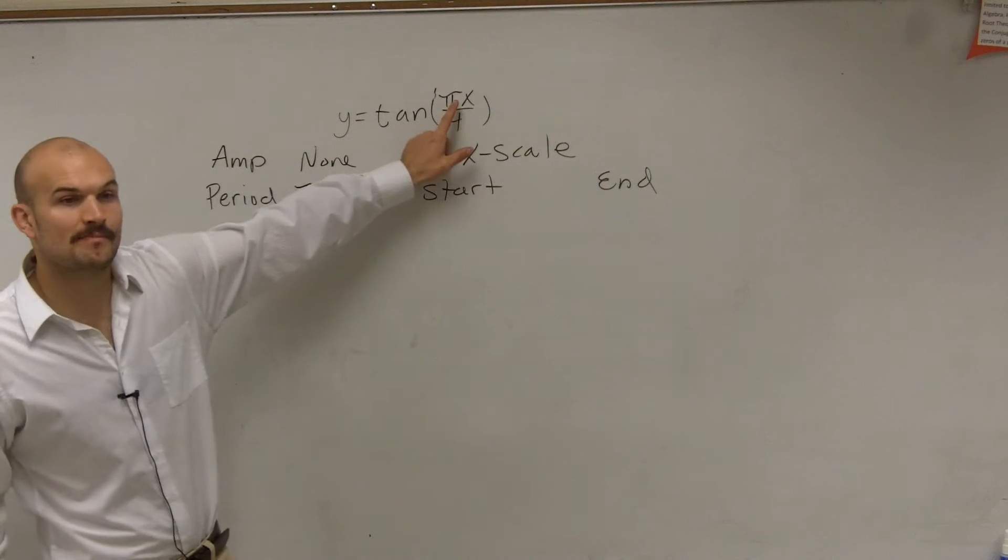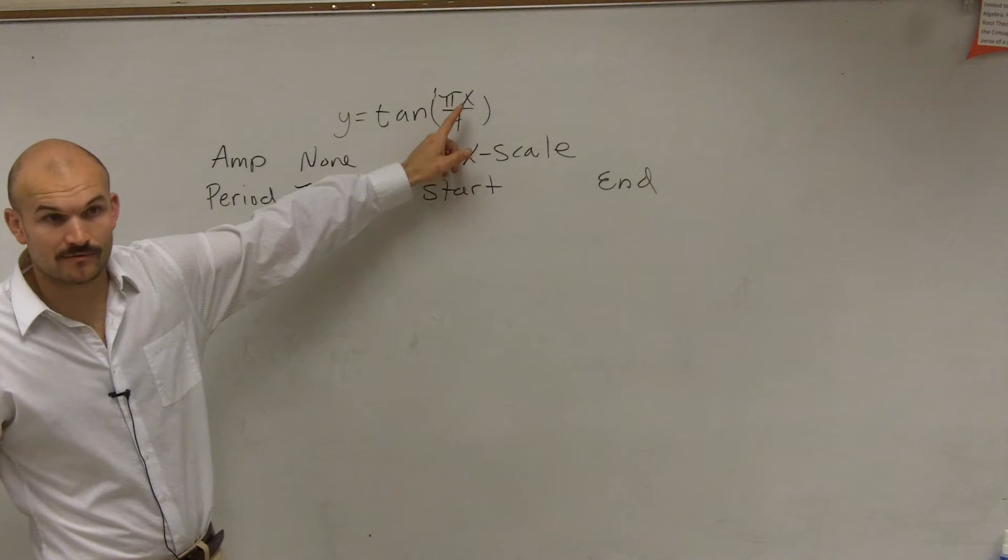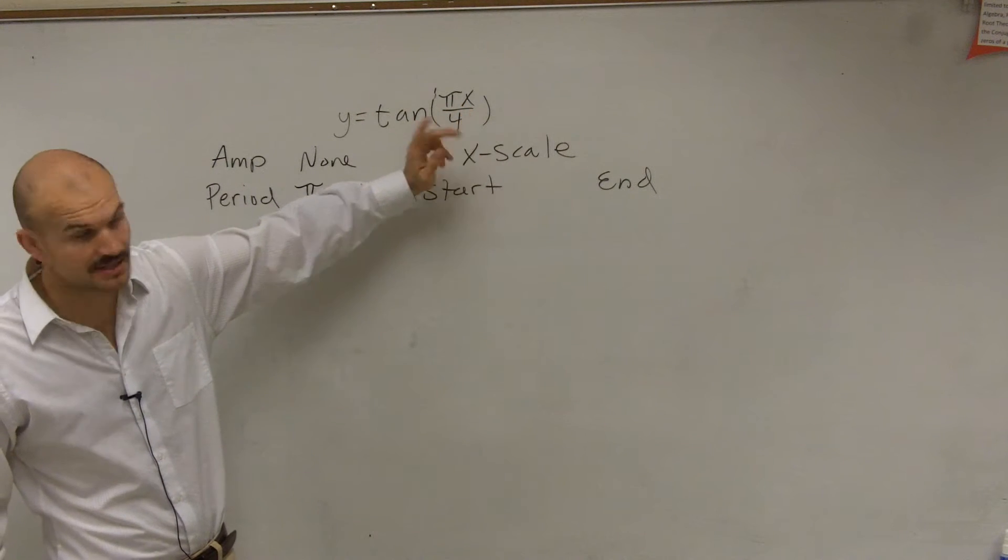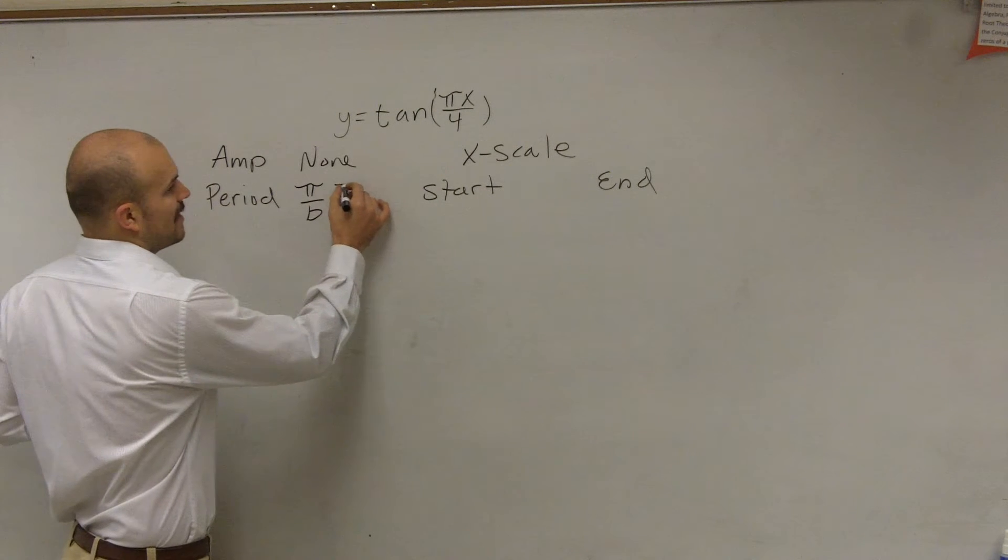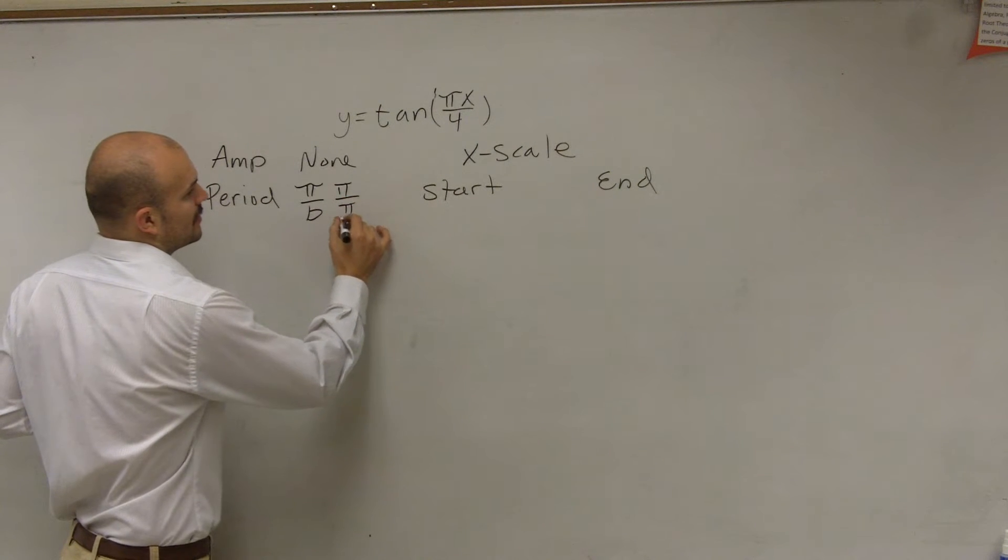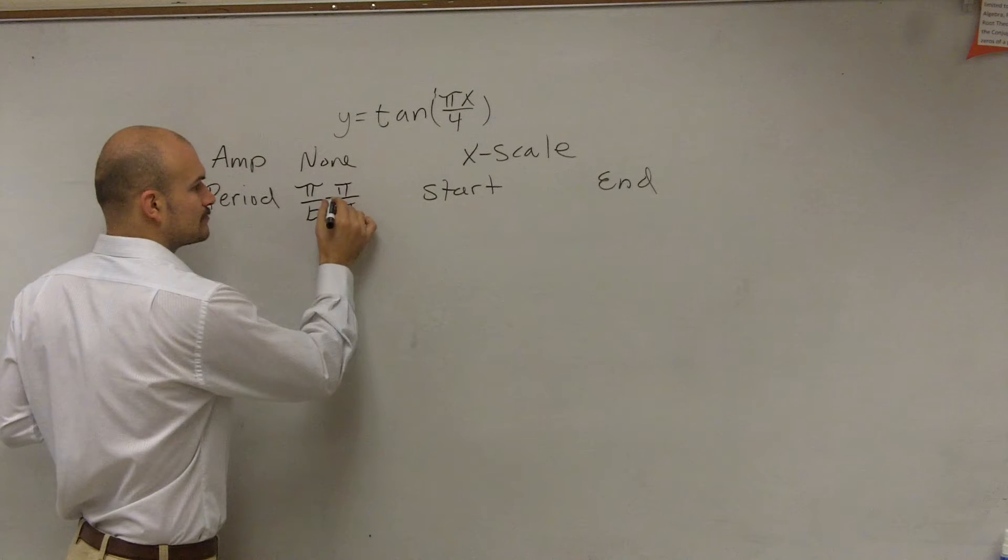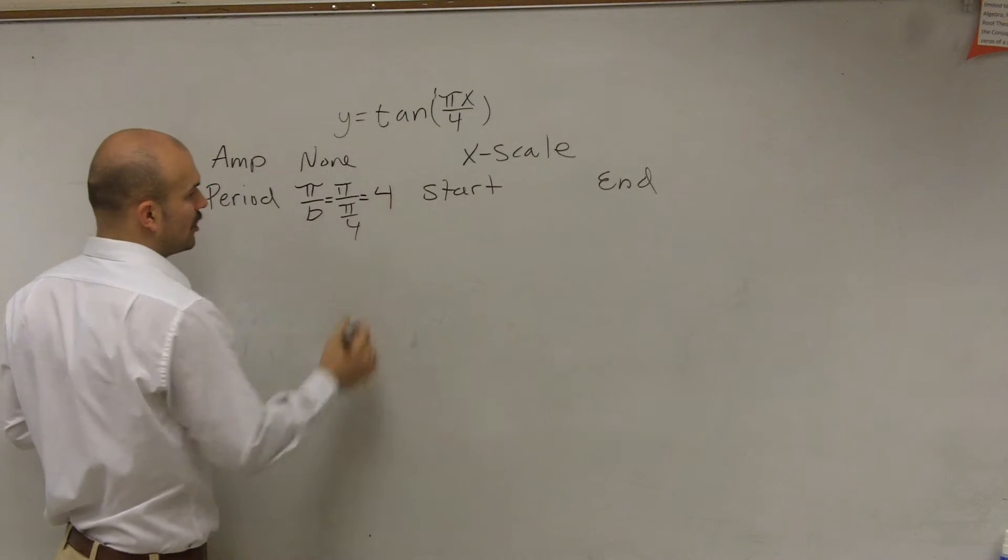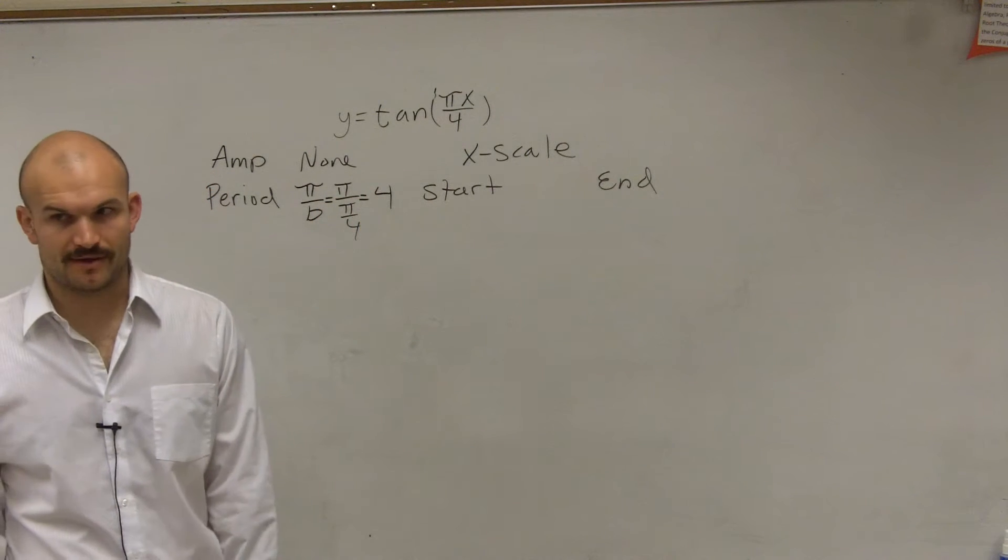So in this case, remember our b is pi, right? Because b is your coefficient of your x, but our pi is being divided by 4. So now we have pi divided by pi divided by 4, which is just going to equal 4.